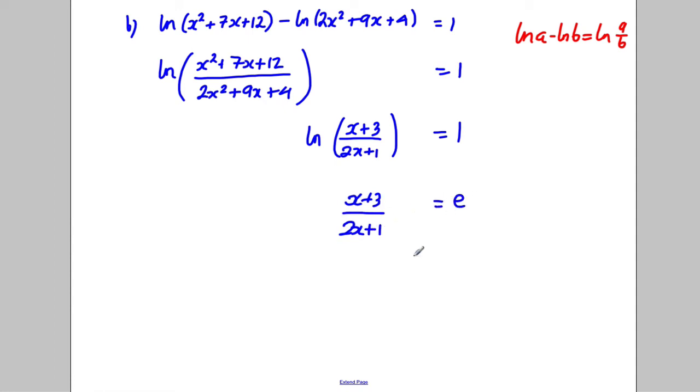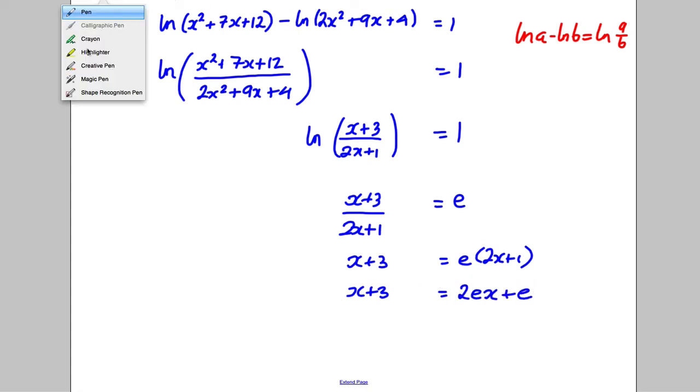To get x add 3 over 2x add 1 would be equal to e. Now I want to make x the subject of the formula, so multiply both sides by 2x add 1, expand the bracket on the left-hand side.